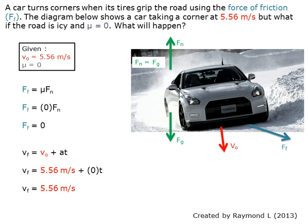As usual, we start with the free body diagram. The force of gravity and the normal force are shown in green and balance each other as the road is level, therefore there is no vertical acceleration.